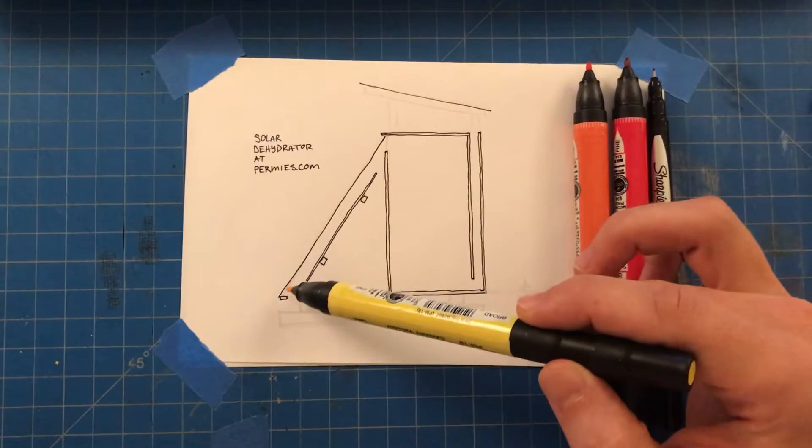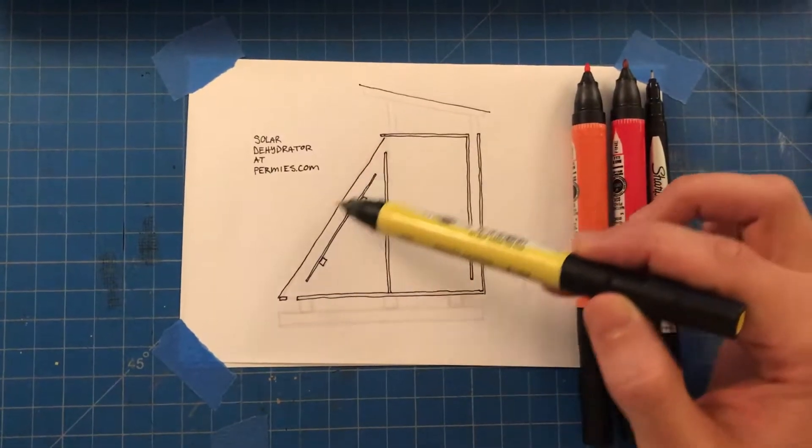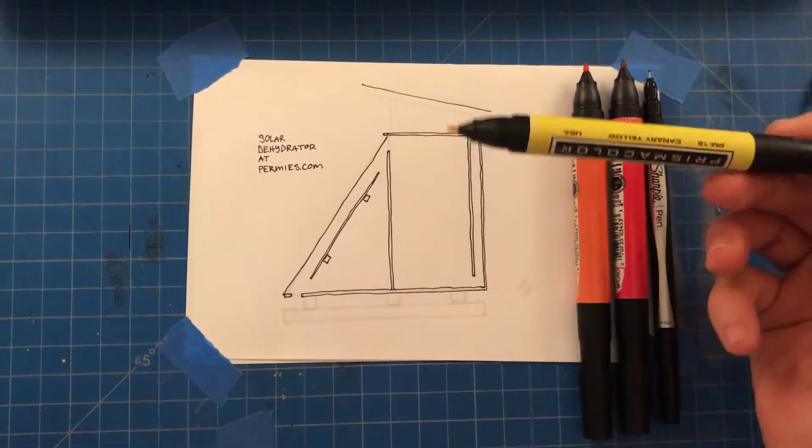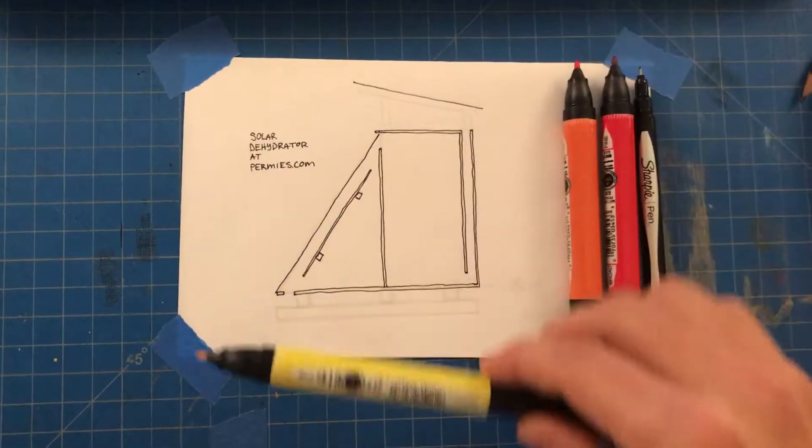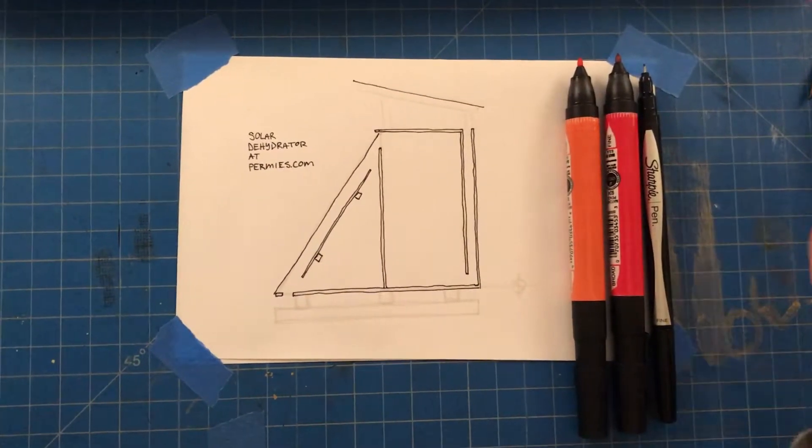So this here is meant to be glass or plexiglass. What you're seeing is a section cut through the solar dehydrator.